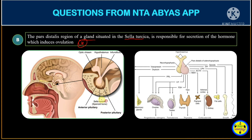The pituitary gland is located in the sella turcica of the sphenoid bone. It has the neurohypophysis and the adenohypophysis. The pars distalis is part of the adenohypophysis, and the pars distalis of the adenohypophysis releases LH — which is what we're looking for. So this statement is true.